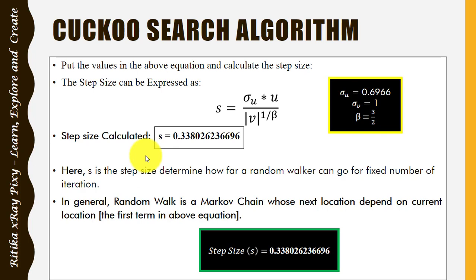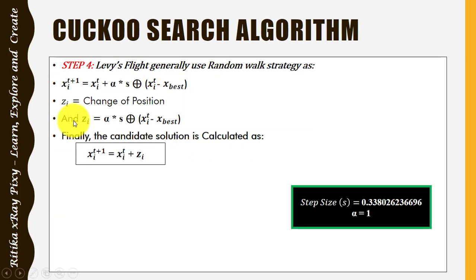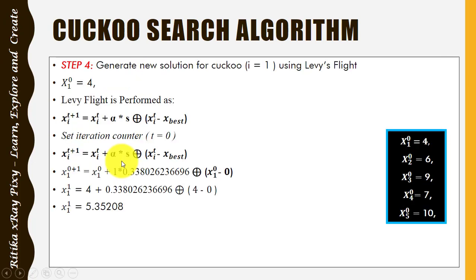The step size s determines how far a random walker can go for a fixed number of iterations. In general, random walk means a chain whose next location depends on the current location — the current location is the first term in the equation. We use x_best, the global best position. Since this is the initial stage, we have no best position, so we consider that value as 0. The new solution equals the old position plus the Lévy flight.